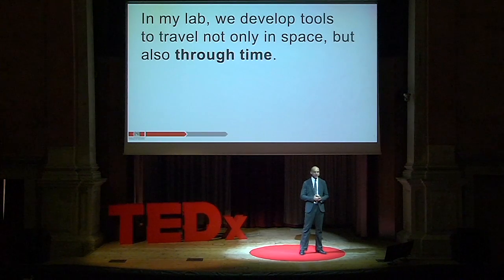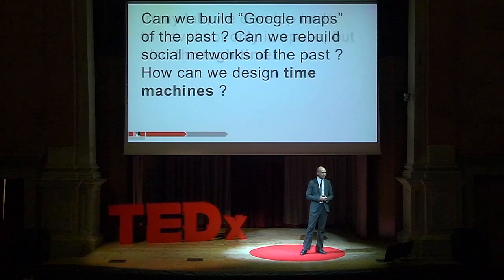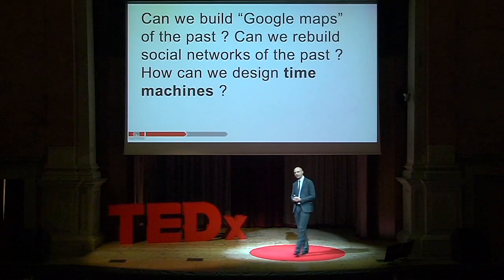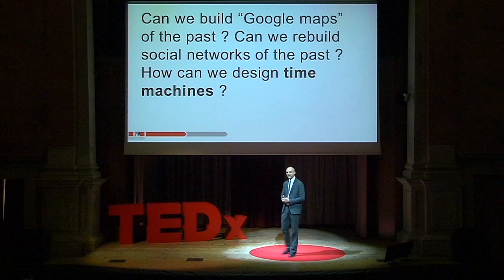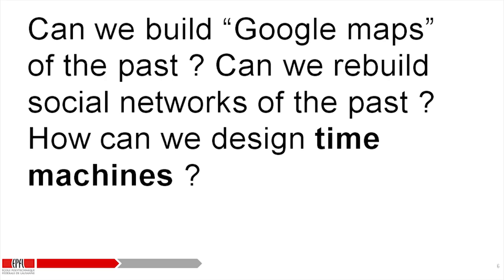The kind of question we're asking is: is it possible to build something like a Google Maps of the past? Can I add a slider on top of Google Maps and just change the year, seeing how it was 50 years before, 100 years before, 1,000 years before? Is that possible? Can I reconstruct social networks of the past? Can I make a Facebook of the Middle Age?